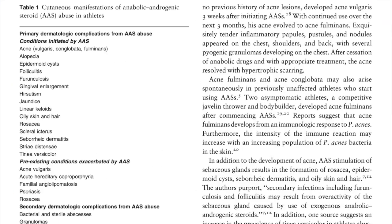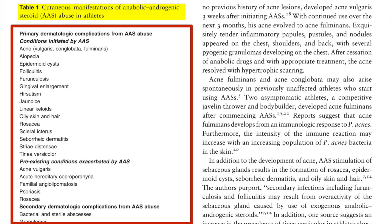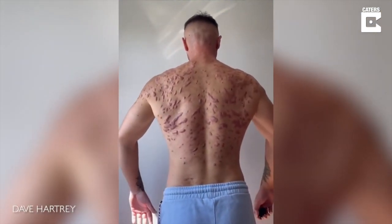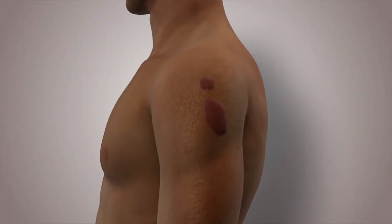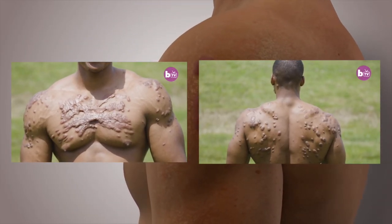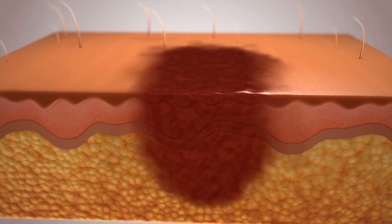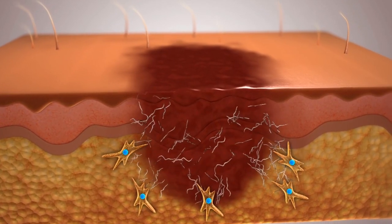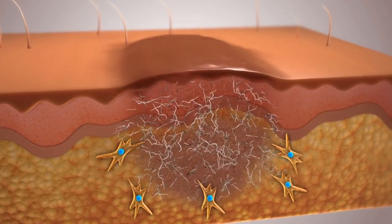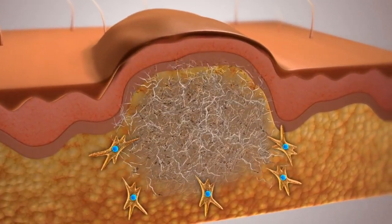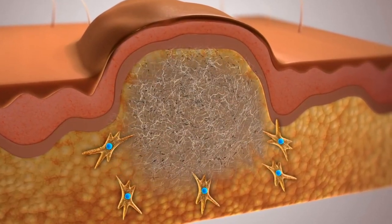As a quick side note, acne is not the only skin condition that can be caused or exacerbated by anabolic steroids. One of the most disfiguring conditions caused by anabolic steroids is keloid scars. The lesions on this man's chest and back are not normal acne scars — they are keloids. Unlike normal scars, keloid scars extend beyond the boundaries of the damaged skin. Studies have suggested that supraphysiological doses of anabolic steroids stimulate both an increase in collagen deposition and a decrease in collagen degradation, resulting in the overproduction of scar tissue. Keloids are very difficult to treat as surgically removing them may create further keloid scarring. If you would like to see a video breaking down other skin conditions caused by anabolic steroids, please leave a comment down below.